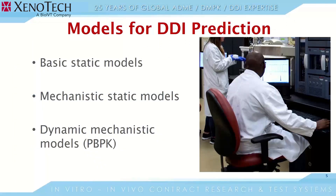Now let's talk about the types of models used for this extrapolation. There are three main types: basic models, static mechanistic models, and dynamic mechanistic models. The main difference between static and dynamic models is that static models assume single dosing or steady-state concentrations, whereas dynamic models deal with multiple dosings and drug concentrations that may not reach a steady state. Dynamic models also incorporate overall physiology into their predictions.